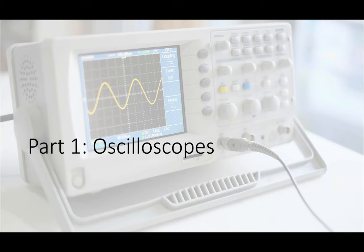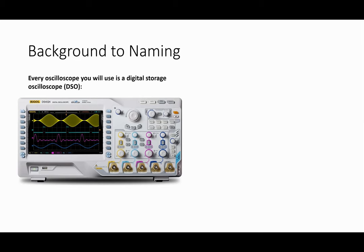Okay, so the big one, the most important one, is oscilloscopes. Some of the confusion or questions actually come about because every oscilloscope you're going to use, and you've probably used so far, is what we call a digital storage oscilloscope, or DSO, like this one here. This is a new scope that you can get for like $300-$400, and it has tons of features — you can store waveforms and everything like that.